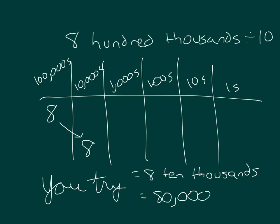So if you multiply by ten, your digits shift to the left one place. If you divide by ten, your digits get shifted over to the right.